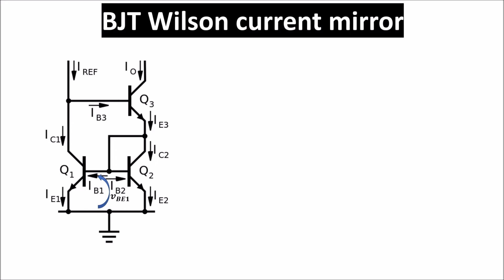The working principle is equal to that of the basic mirror, but here we see that the third transistor balances better the currents in the two branches. We can see this in a visual way.